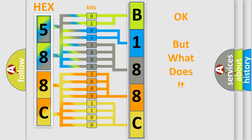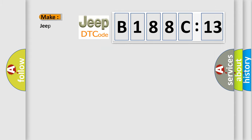The number itself does not make sense to us if we cannot assign information about what it actually expresses. So, what does the diagnostic trouble code B188C13 interpret specifically?